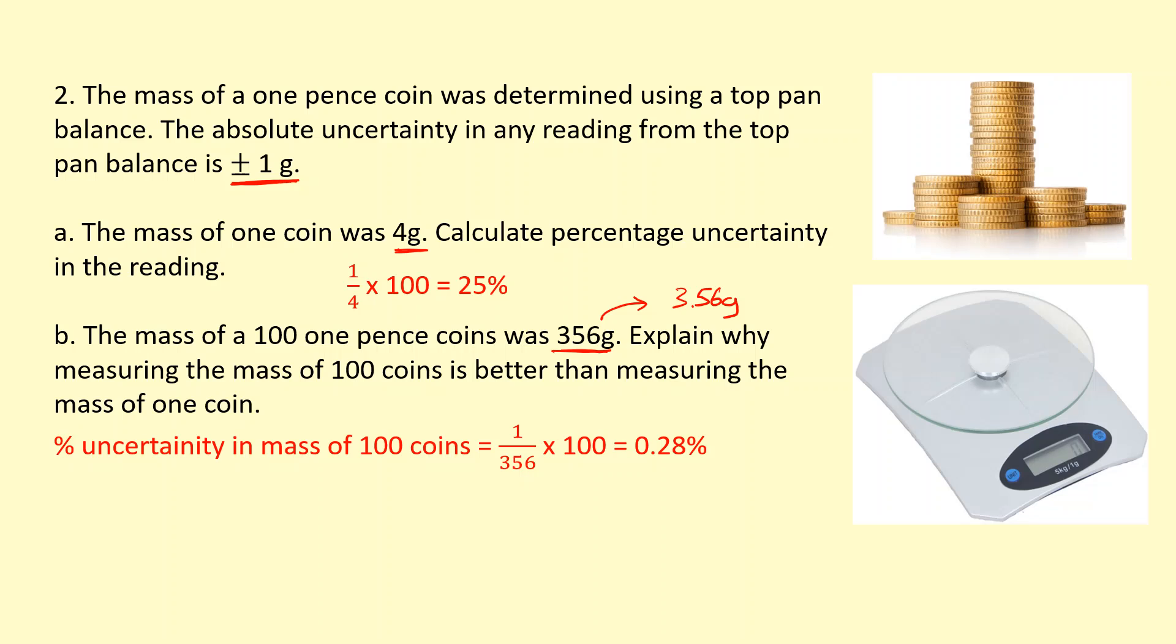Now, to get the actual mass of the coin, I divide the mass of 100 coins by 100. But that doesn't affect the percentage uncertainty. It's still 0.28%. So you can see taking a larger reading reduces the percentage uncertainty in the measurement.